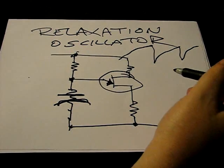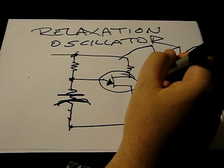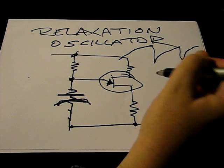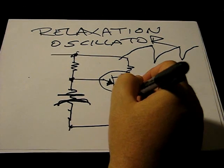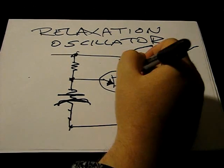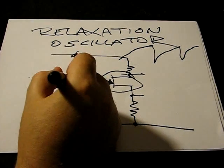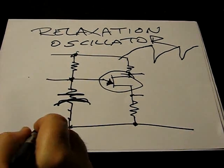What ends up happening is that this becomes an active element providing some control in the circuit. As opposed to a regular transistor where you'd expect to be taking an output from here or an output from here, in the relaxation oscillator we're actually getting the output from here.